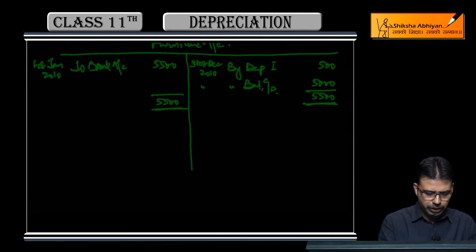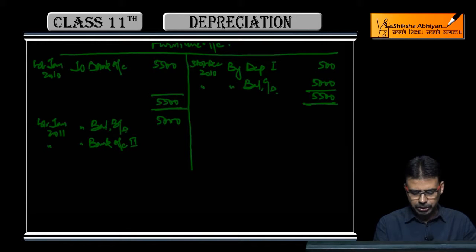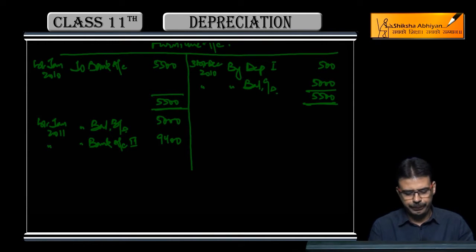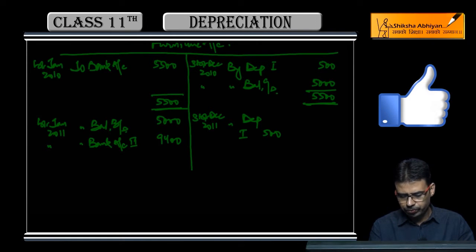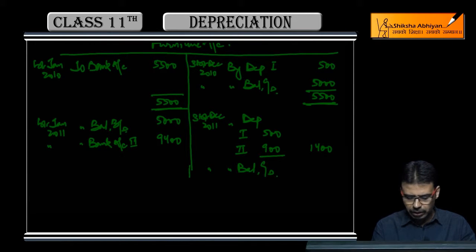Next year, carry this forward: 1st January 2011 to Balance Brought Down Rs. 5,000. On the same date to Bank Account, we purchased the second furniture also for Rs. 9,400. At year end, we will again apply depreciation—first furniture's Rs. 500 and second furniture's Rs. 900, total Rs. 1,400 depreciation, and the remaining balance is carried down.